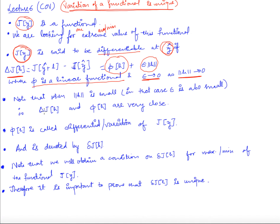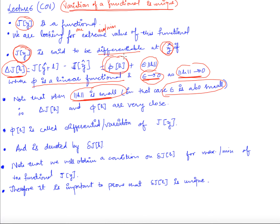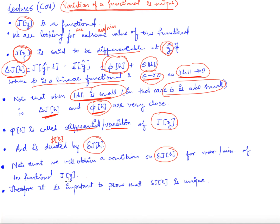If the norm of h is small, then ε also has to be small, which means the change in j(y) is almost the same as the functional φ(h). So when the norm of h is small, the change in the functional and φ(h) are very close. This φ(h), which is a linear functional, is called the differential or variation of the functional j(y), and we denote it δj(h). We will obtain a condition on this variation for maxima and minima of the functional.